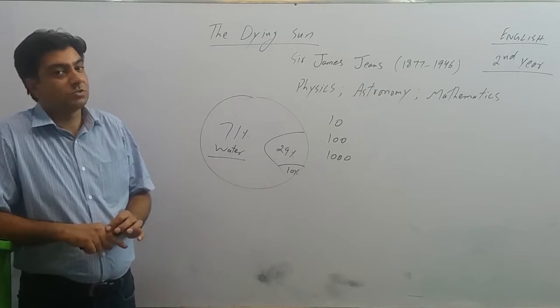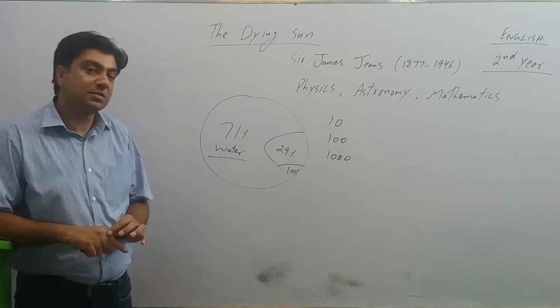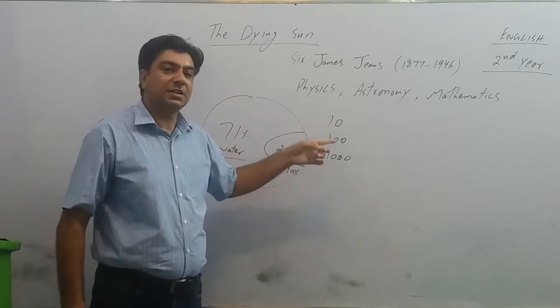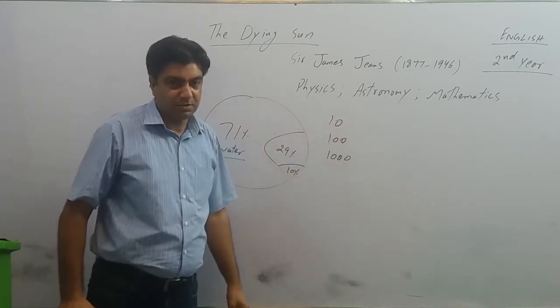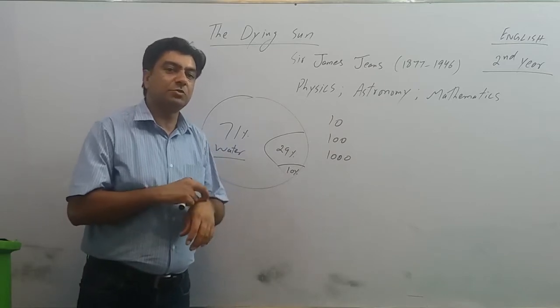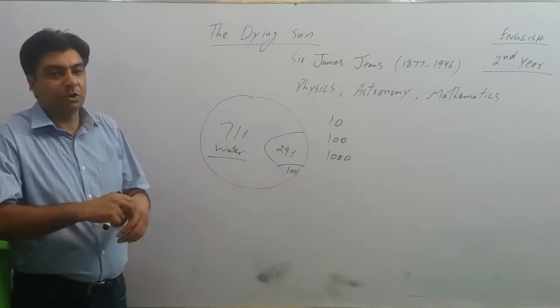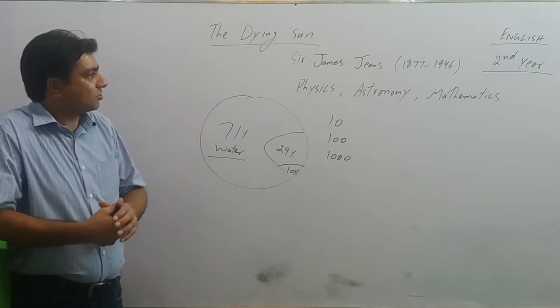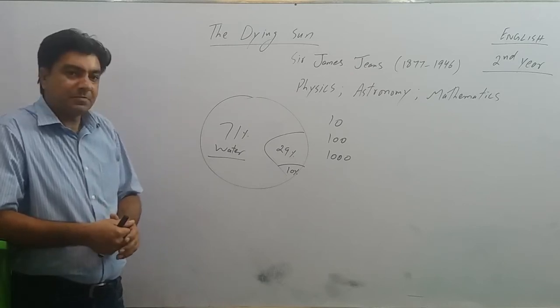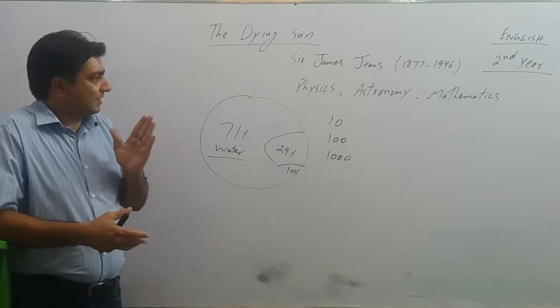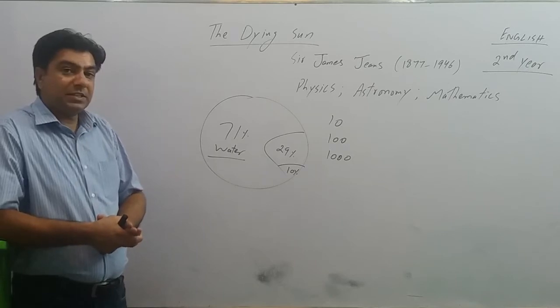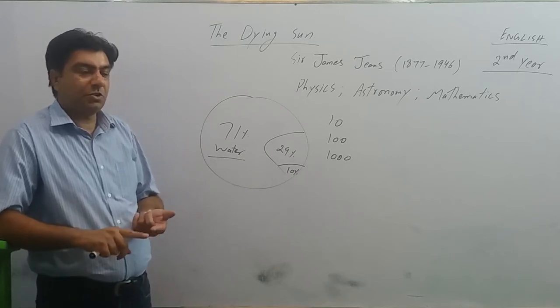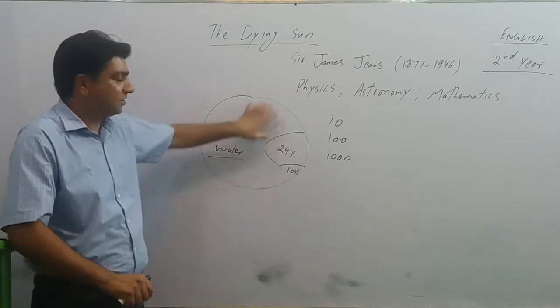So sun is very big but not the biggest. There are far bigger stars out in the universe. Now the next question is how many? Sir James Jeans shocks us by telling that the number of stars in the universe is probably equal to the number of grains of sand on this planet Earth.